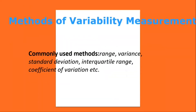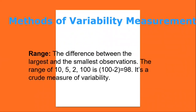Methods of variability measurement: variability, or dispersion, measures the amount of scatter in a data set. Commonly used methods include range, variance, standard deviation, and interquartile range. Range: the difference between the largest and the smallest observation. The range of 10, 5, 2, 100 is 100 − 2 = 98. It is a crude measure of variability.